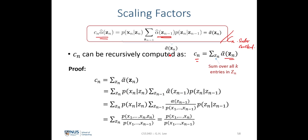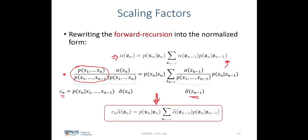The proof that marginalizing alpha-tilde gives c_n: alpha-tilde is this expression, and we marginalize over z_n. Rewriting alpha-hat in terms of the original alpha divided by its normalizing constant, substituting alpha(z_{n-1}) with the joint probability of x1 through x_{n-1} and z_{n-1}, and applying the product and sum rules, we end up with an expression that, after marginalizing over z_n, is exactly the definition of c_n introduced to scale the forward recursion.